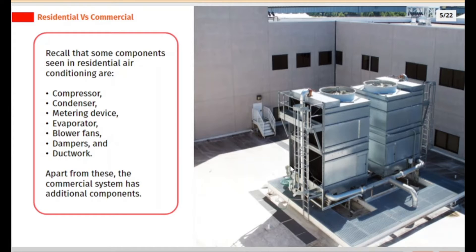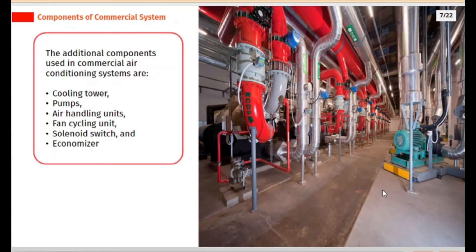Apart from these, the commercial system has additional components. The additional components used in commercial air conditioning systems are: cooling tower, pumps, air handling units, fan cycling unit, solenoid switch, and economizer.